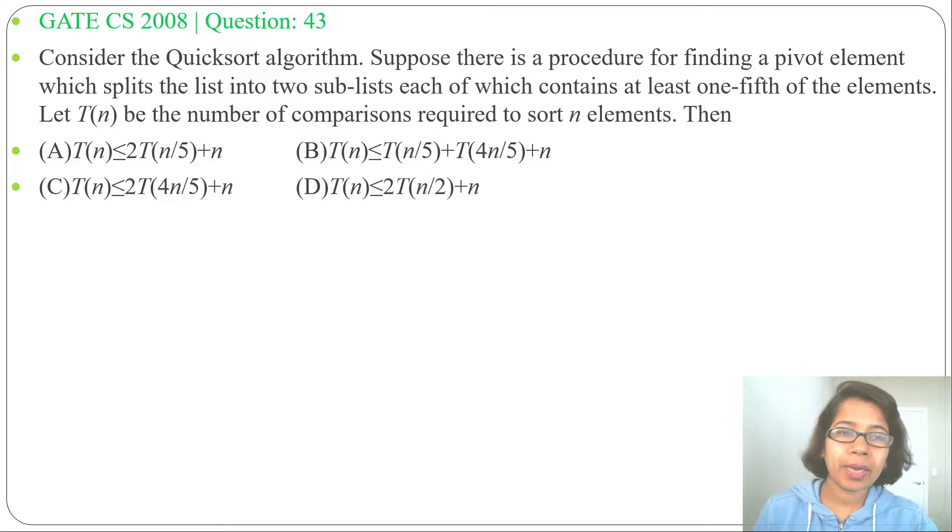Let T(n) be the number of comparisons required to sort n elements, then four options are given. In four options, four recurrence relations are given and it is asking which one is the recurrence relation for this quicksort.